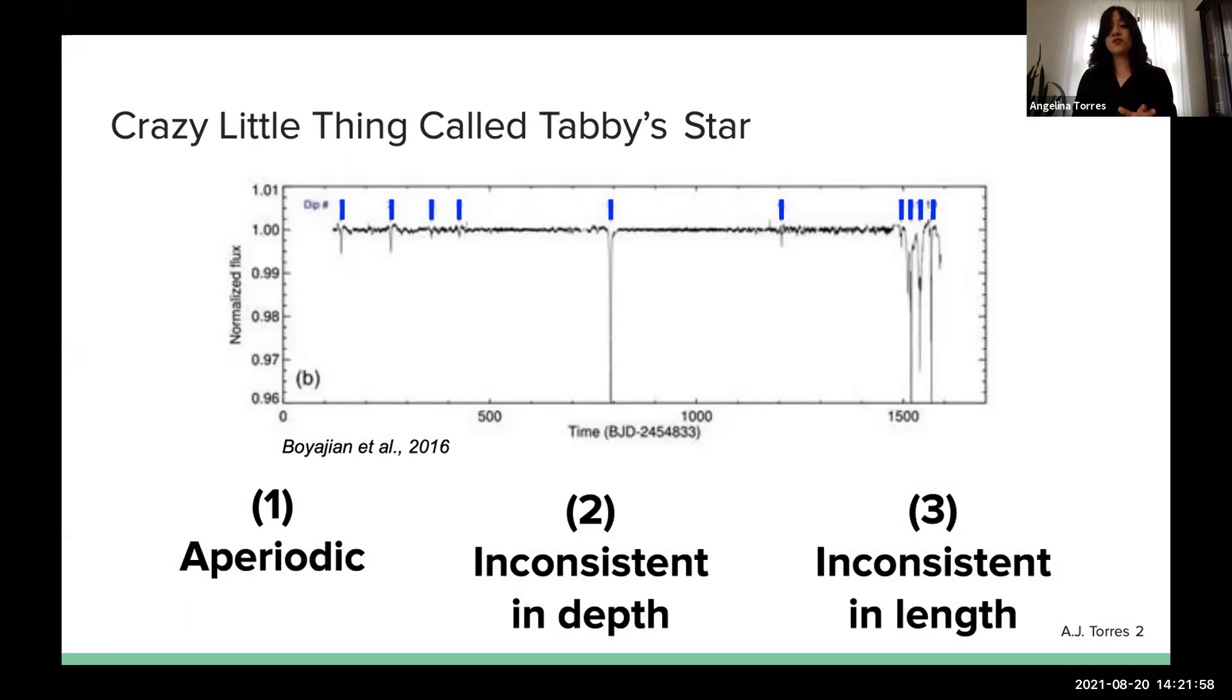Here we have a plot of the original data that was taken by the Kepler telescope of this star. On the x-axis, we have the total observation time, about 1600 days. On the y-axis, we have the normalized flux of the star. Labeled in blue are 10 discrete dips which really visualize this irregular behavior. Notice that these dips range from about 0.2% of the star's overall flux to going straight off the plot. These peak at 22% of the star's overall flux.